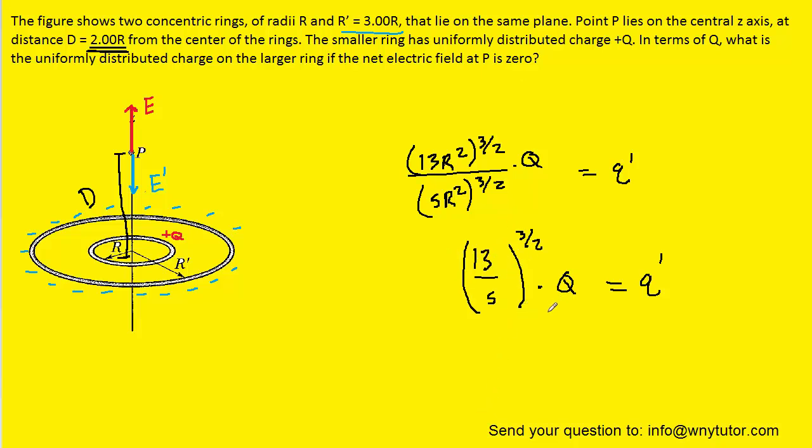Then we have what we had sought, the charge Q prime, in terms of the charge that was present on the smaller ring, which was capital Q. We can pick up our calculators and simplify this expression. When we do that, we get 4.19 times capital Q is equal to the magnitude of charge on the larger ring.